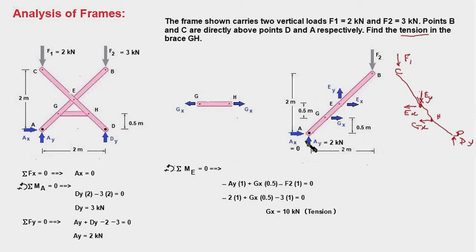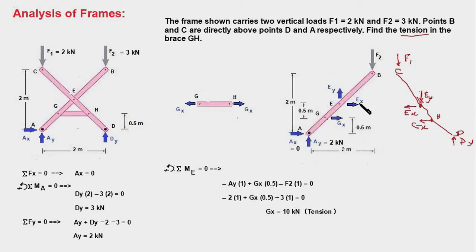Now we write the equilibrium equations, choosing to take moments about point E. Sigma ME = 0 gives: minus AY times 1 (AY causes clockwise moment, arm = 1 m), plus GX times 0.5 (GX causes counterclockwise moment, arm = 0.5 m), minus F2 times 1 (F2 causes clockwise moment, arm = 1 m) = 0. Solving this expression gives GX = 10 kN. Since the result is positive, the member is in tension.